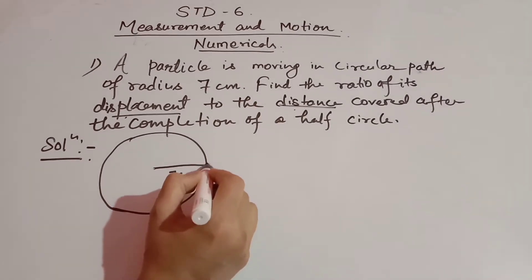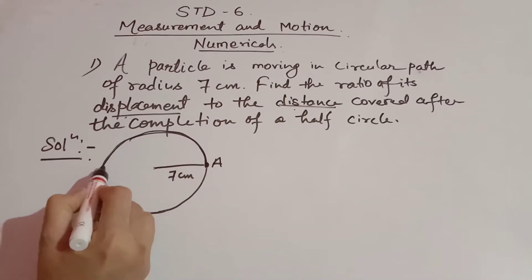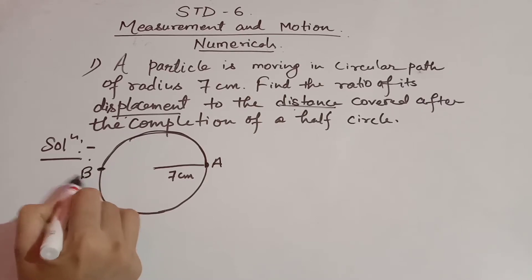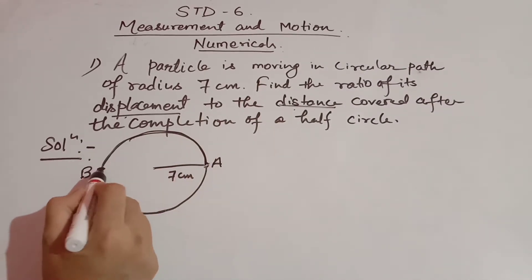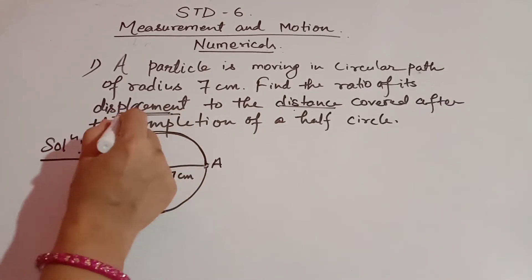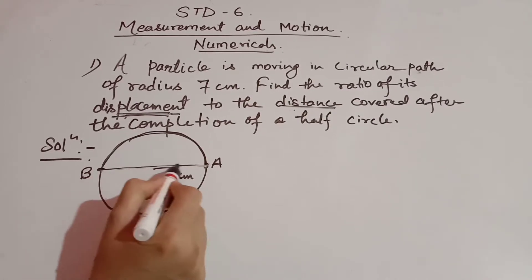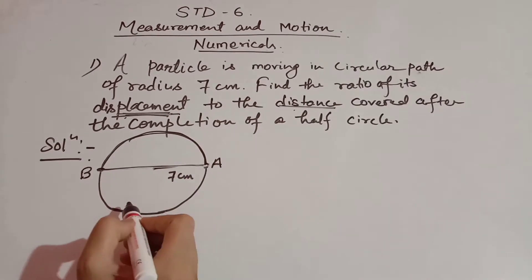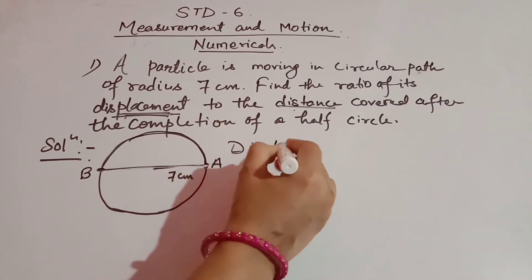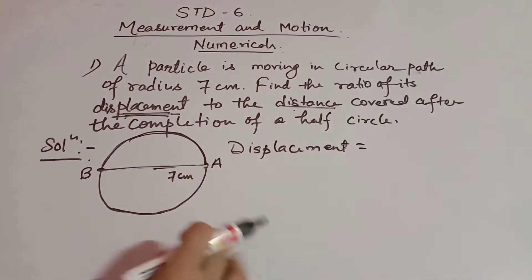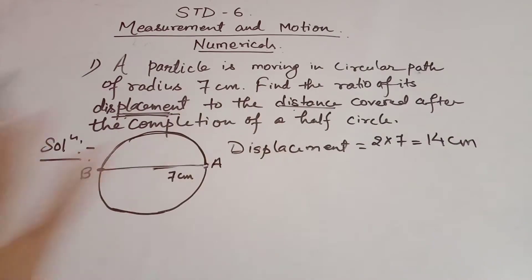Now suppose in this question the particle completes half a circle. The radius is 7 centimeters. Suppose this is point A, so the particle starts moving from point A and completes a half circle, then comes to point B. The initial position of the particle is A and the final position is B. Displacement is the distance between the initial and the final position, which is the diameter of the circle. So if radius is 7, then diameter will be 7 into 2.